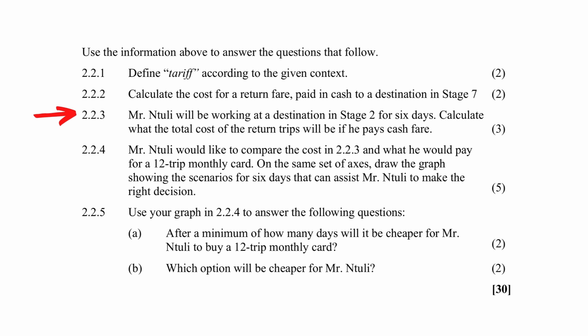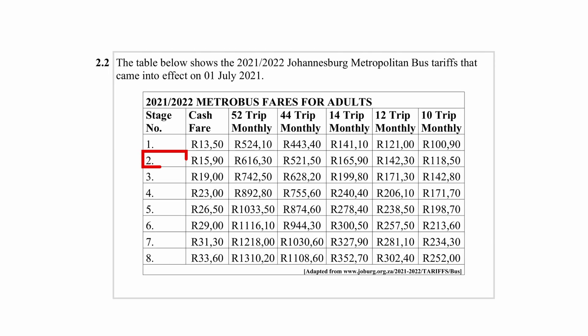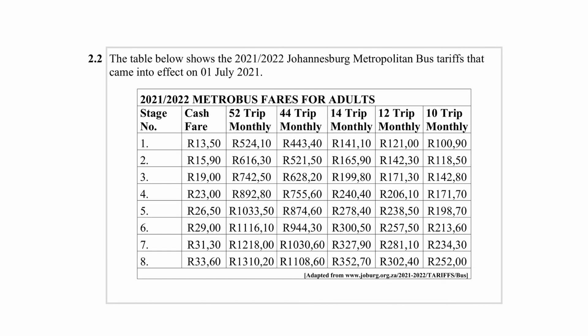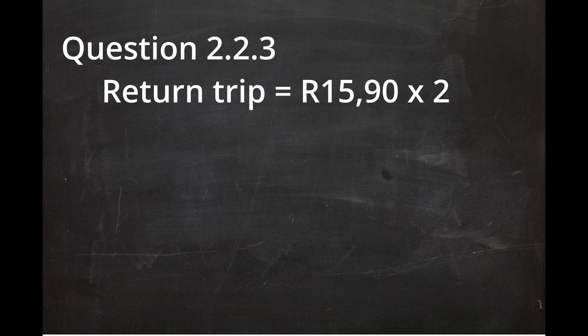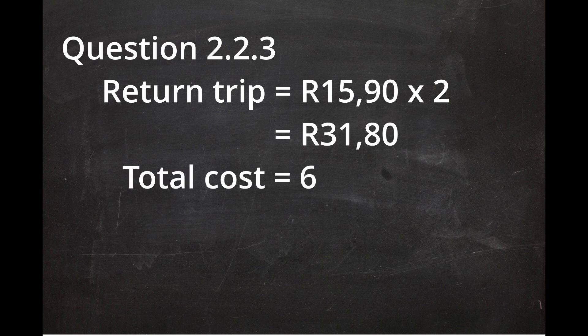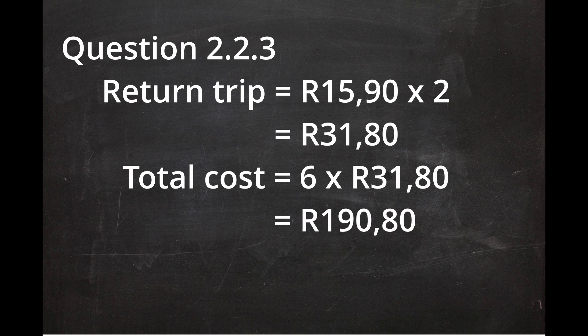In question 2.2.3, you have to calculate the total cost for 6 return trips to a destination in stage 2. A return trip to stage 2 equals R15.90 multiplied by 2, which equals R31.80. Since this person has to make this trip for 6 days, the total cost will be 6 days multiplied by R31.80 per return trip, giving a total cost of R190.80.